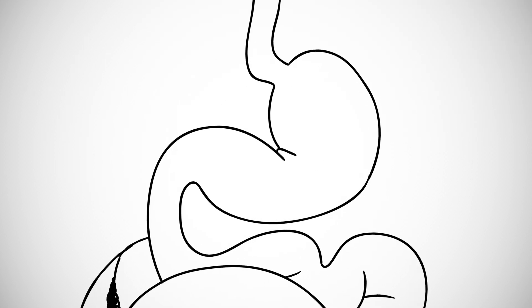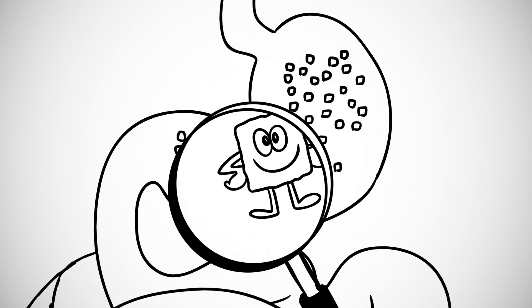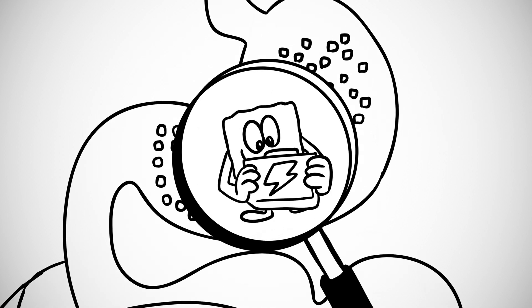When the stomach digests carbohydrates like grains, starches, and fiber, it breaks them down into a sugar called glucose, which the body uses for fuel.